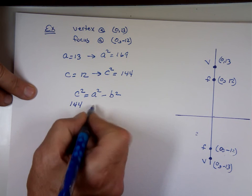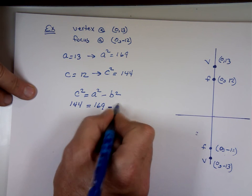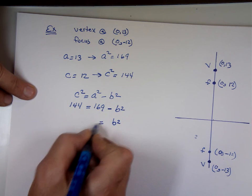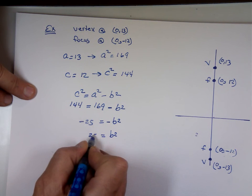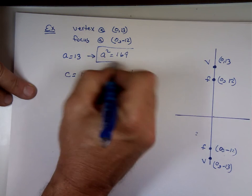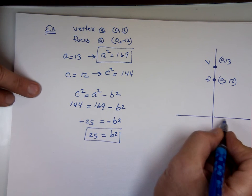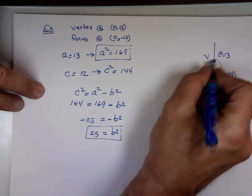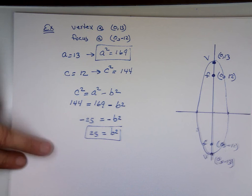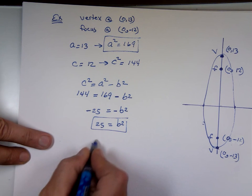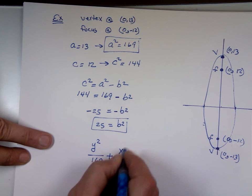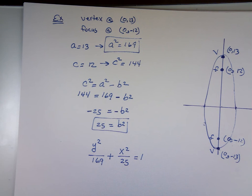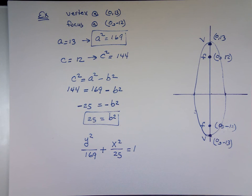Since the longer side is Y, the equation is: Y squared over 169 plus X squared over 25 equals 1. Notice that by giving you just two pieces of information, we managed to work the problem backward and get everything we need to find about the ellipse.